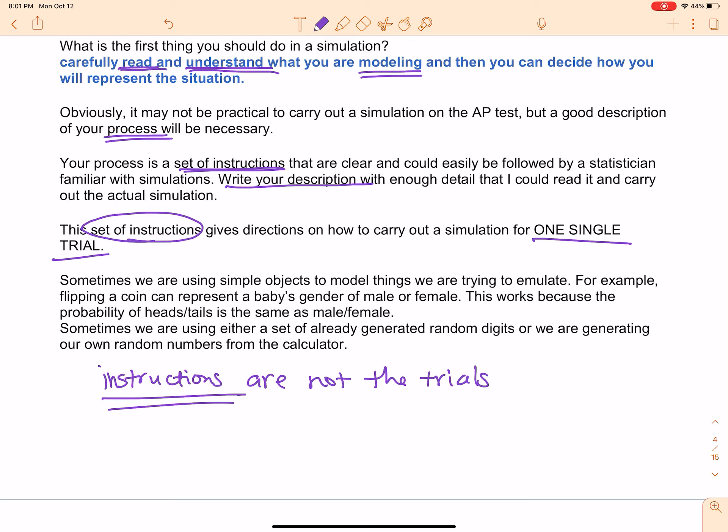So how are we going to do this? Sometimes we are going to use simple objects. If we have two possible outcomes, we can flip a coin. Or we can use a die and the even numbers will represent one thing and the odd numbers will represent something else. There are all kinds of simple objects that we can use to simulate a random event.